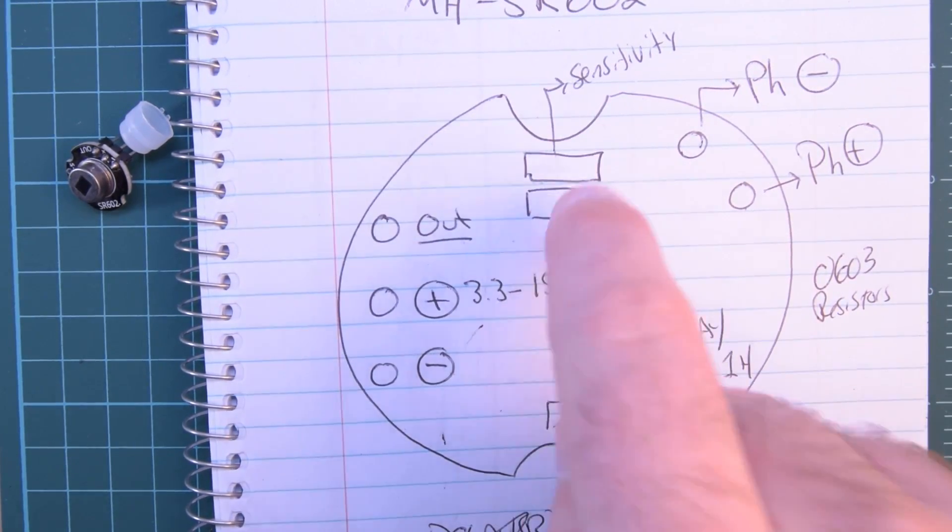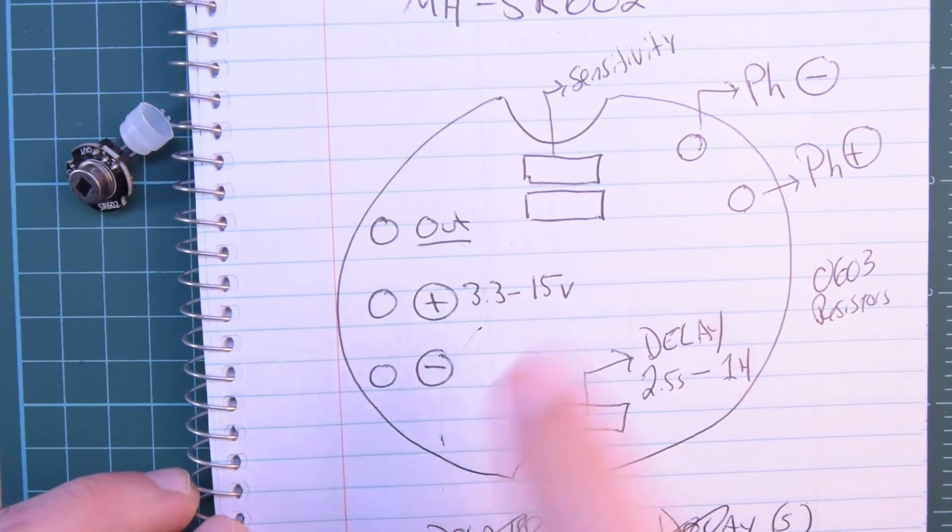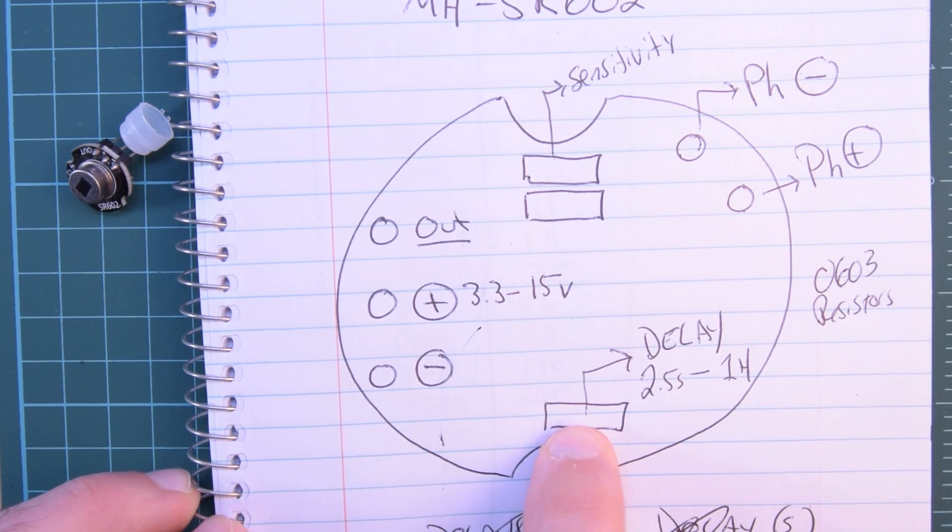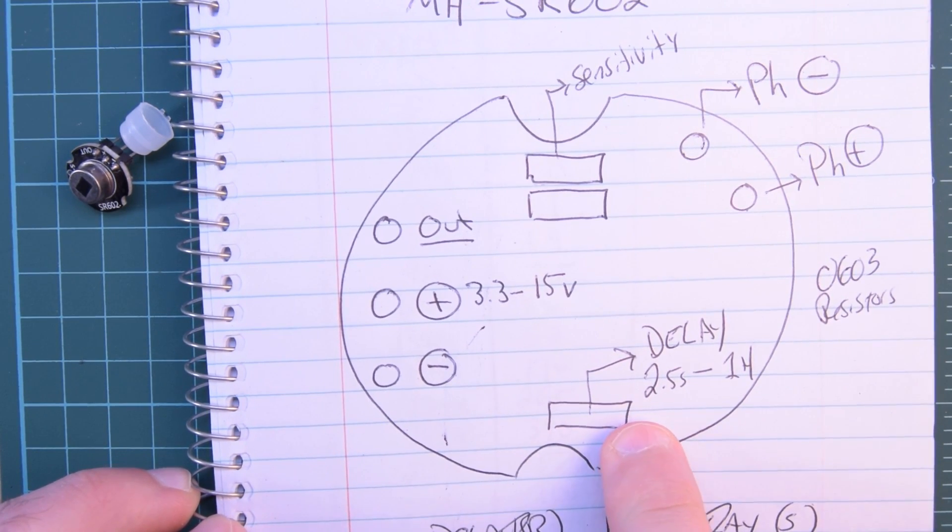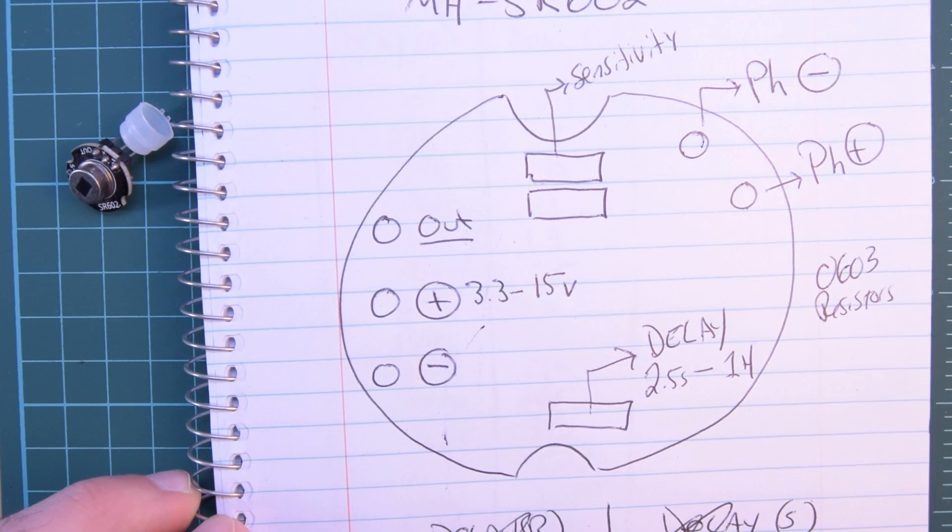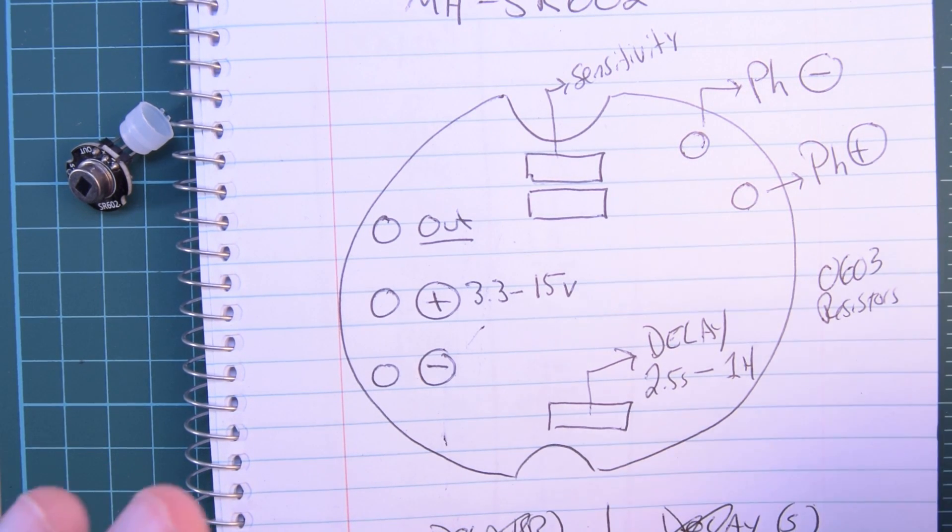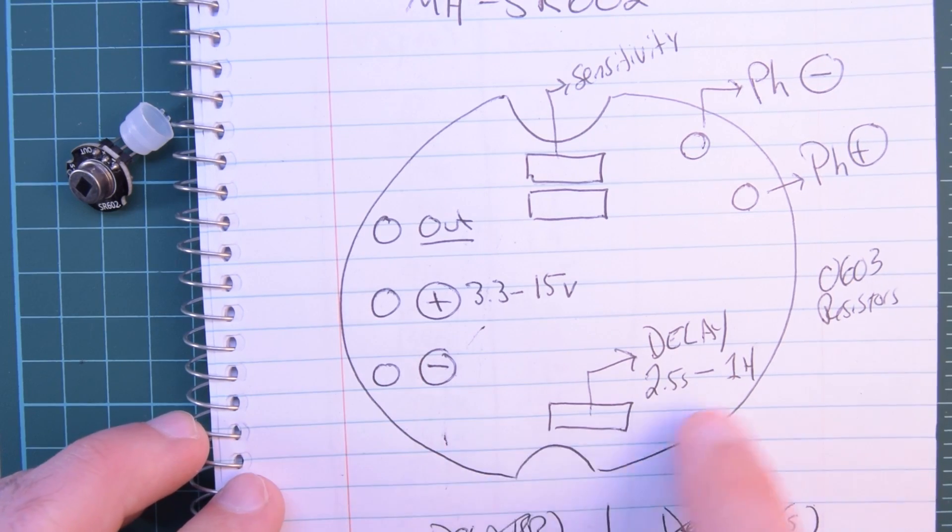Right now, there is a 0 ohm resistor in there. Down here, on the side of the other notch, is the delay resistor. Anywhere between 2.5 seconds to 1 hour, the information says. And there is a chart and I'll show you that shortly.